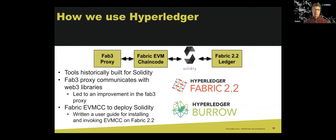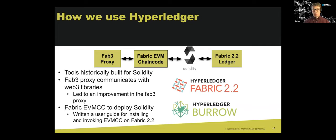You can see this diagram here of the proxy, the chain code, and the Solidity deployed to the ledger. A couple of things came out of this effort: we did help with the Fab3 proxy — there was a minor bug fix — and we wrote documentation on how to deploy the EVM chain code to later versions of Fabric, like Fabric 2.2 and 2.2.1.